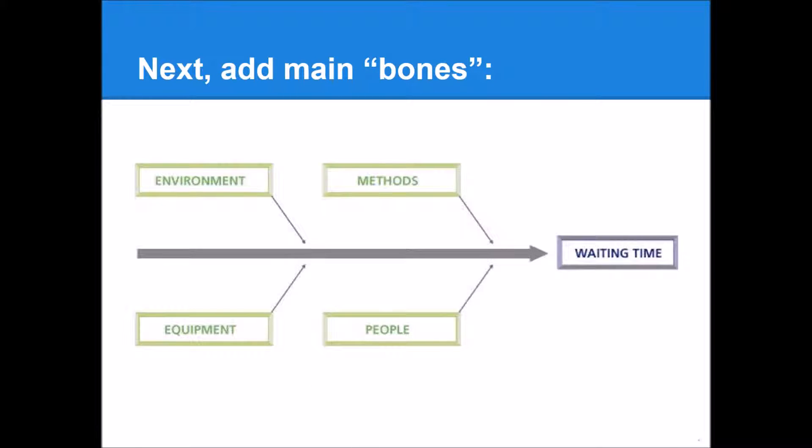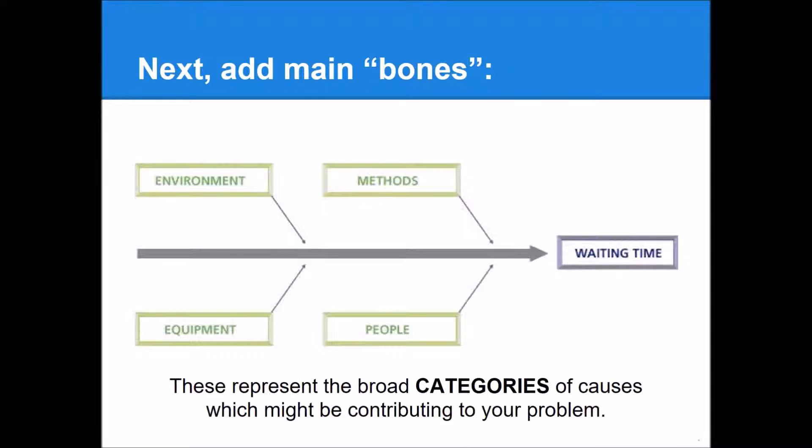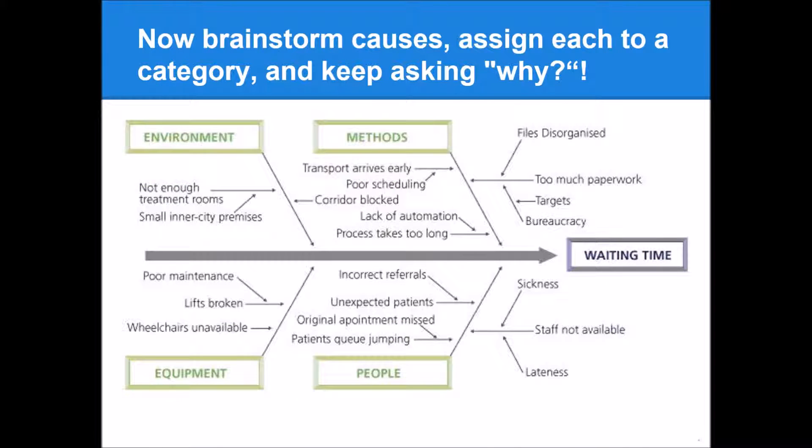Next, we add the main bones or broad categories of potential causes of our problem. And these four that you see here are pretty common categories of potential causes of our problems. Finally, for each of those broad categories, we brainstorm specific potential causes for our problem.